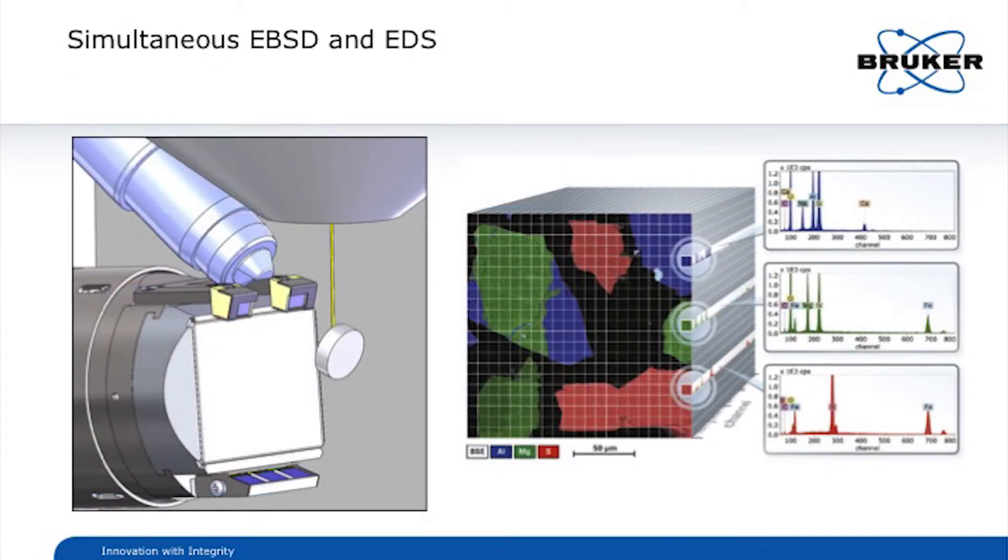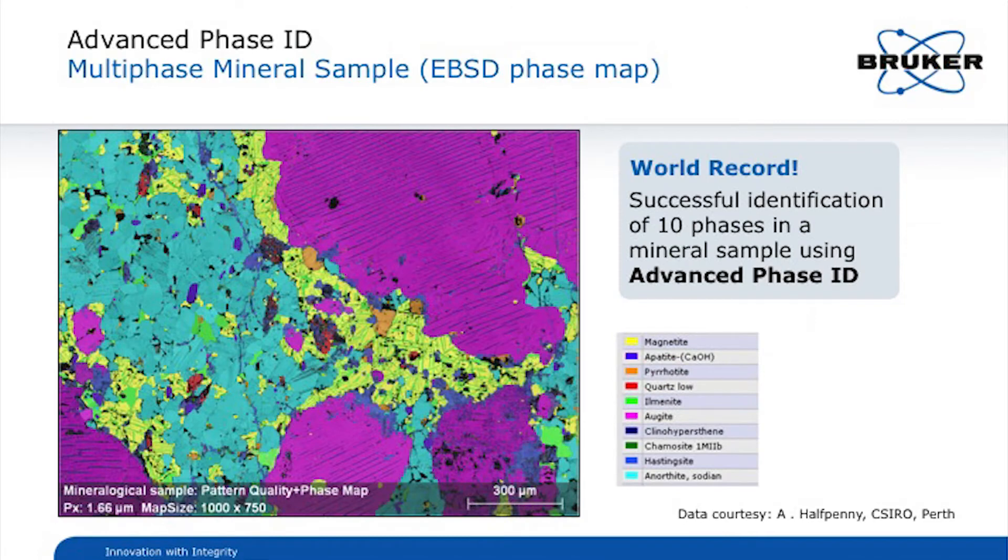Simultaneous EDS and EBSD mappings can be acquired with a speed of up to 930 patterns per second and the map data are saved as a position tagged hypermap database that includes both the EDS and EBSD results. The EDS spectra can be used for phase discrimination and for our unique advanced phase ID.